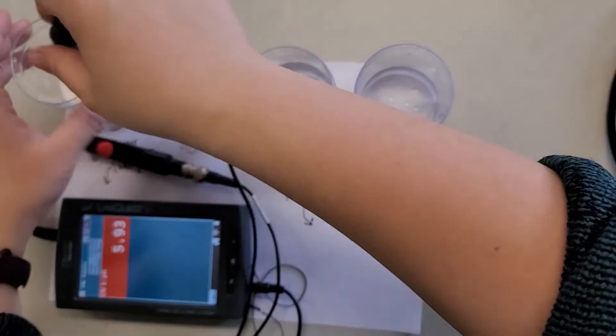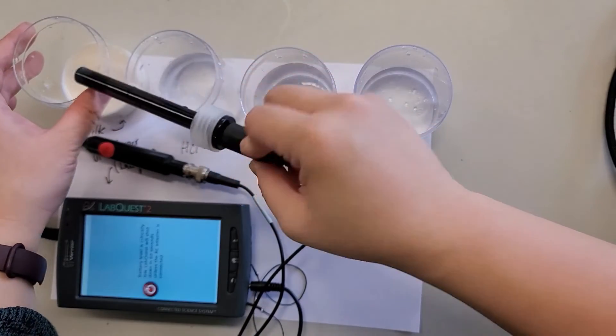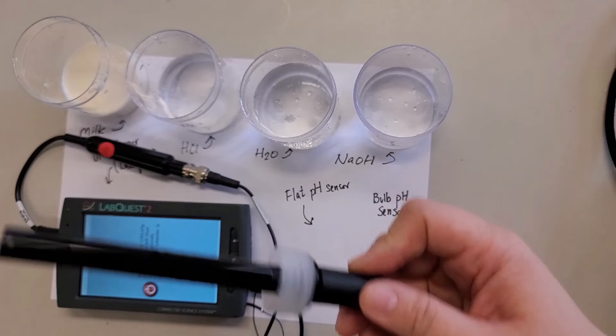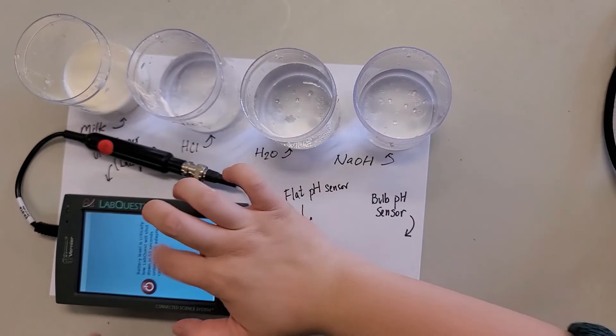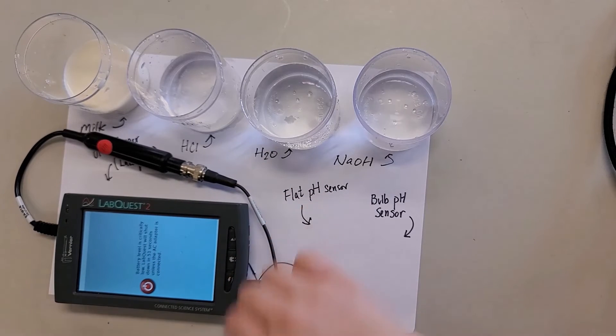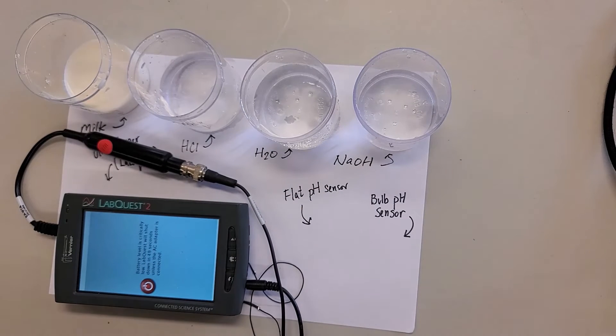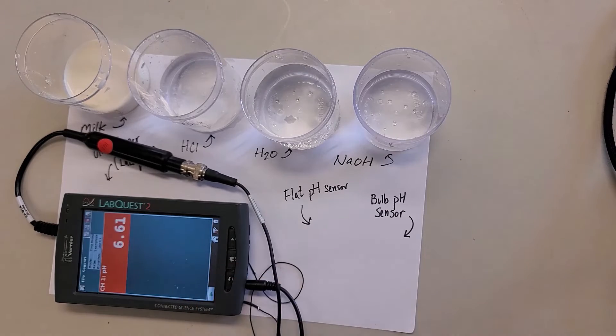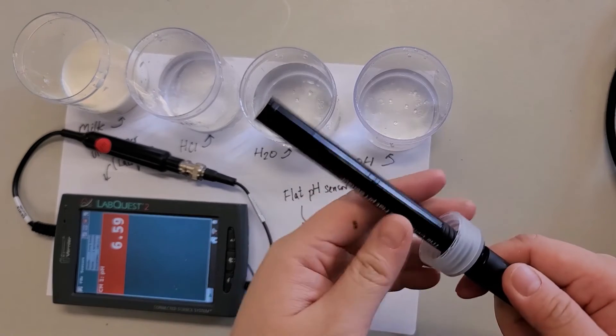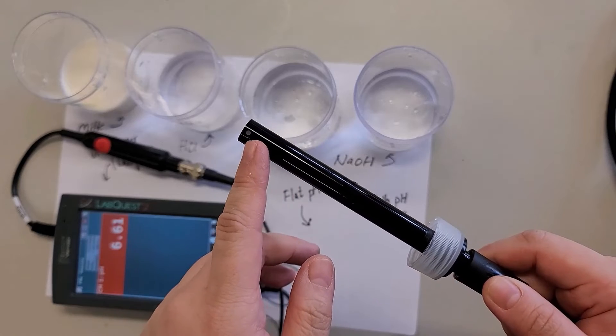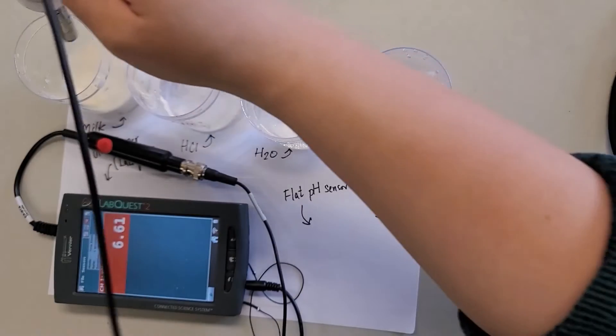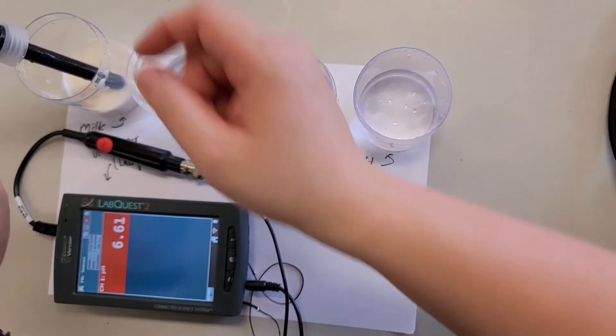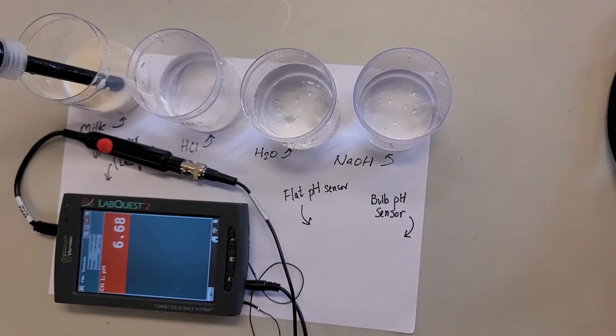Now when you put in the milk solution, you need to make sure, just one thing though - you need to make sure that this bulb here is submerged into the solution because that's how they detect it. So put it in and then wait for a while until it's stabilized.